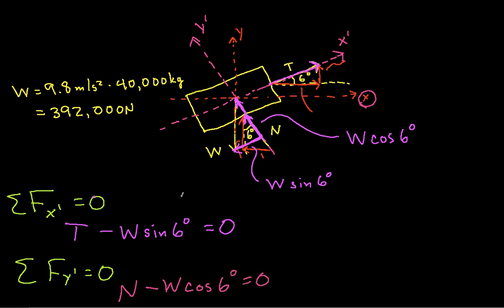So you can see then that these are going to be easy to solve. In fact, by looking at this, T is going to be W, which is the weight, this guy, times sine of 6 degrees. N is going to be that same W times cosine 6 degrees.